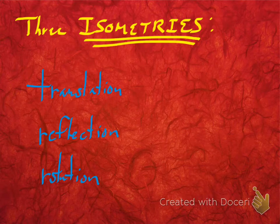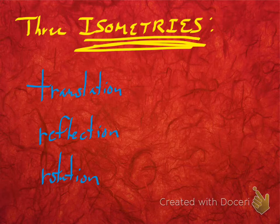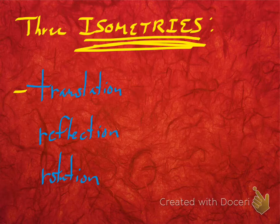Isometries are special kinds of transformations where everything is preserved — it basically stays the same. So if you had a coaster and you slide it around the table, or you turn it, or you reflect it, that's basically what we're talking about. The three types of isometries are translations, reflections, and rotations.